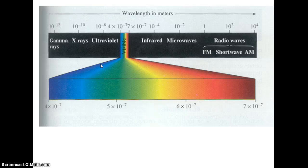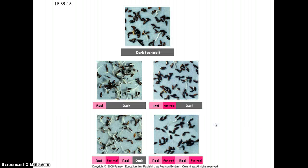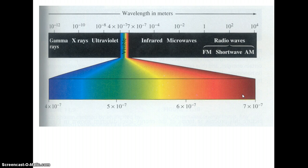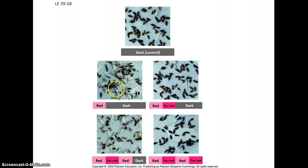Light is extremely important for plants, and you're familiar with the visible spectrum of light. Not all wavelengths of light are created equally. We've already talked about photosynthesis and how blues and reds are the more photosynthetically active wavelengths, whereas greens and yellows not so much. Red light is also important when it comes to seed germination. Clearly, if you keep seeds in the dark, they tend not to germinate very much. However, if you expose them to a little bit of red light or near-red light, they will germinate.